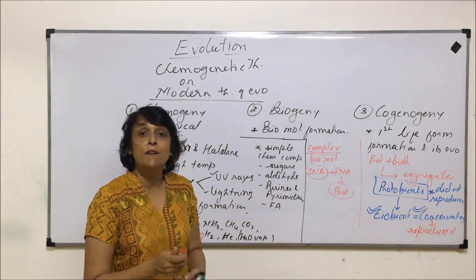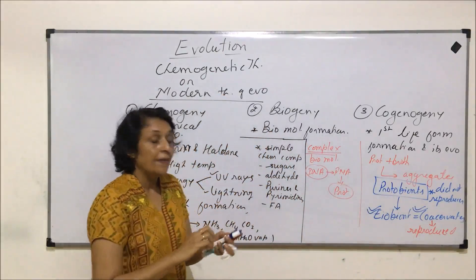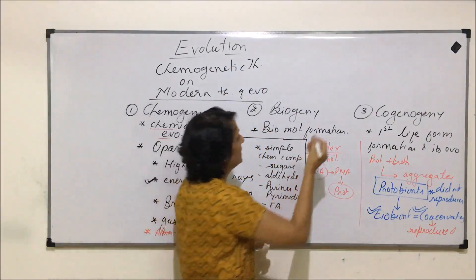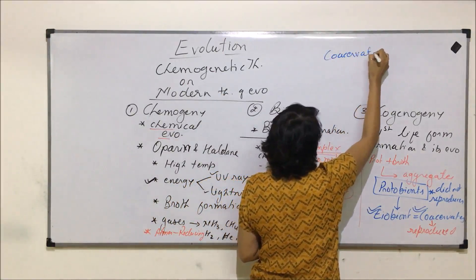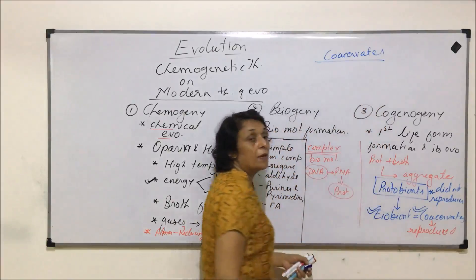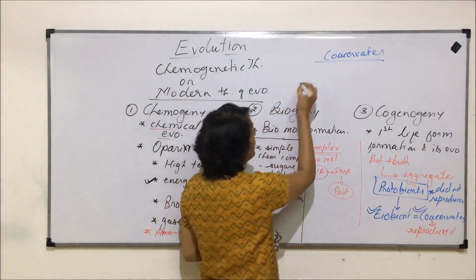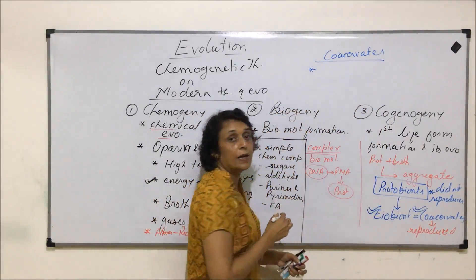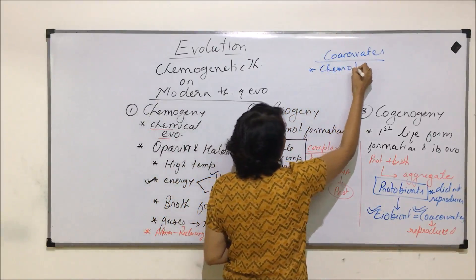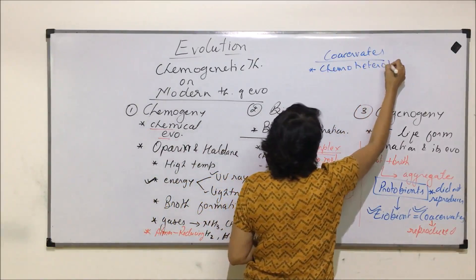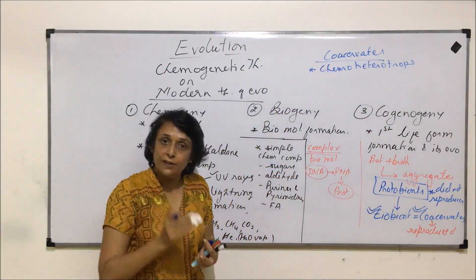Now, the first living organisms which originated, like coacervates — at that time there was no molecular oxygen. So it is believed that the first life forms were actually chemoheterotrophs, meaning they used chemicals and obtained energy from them.